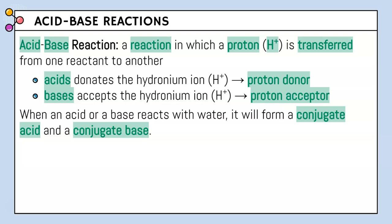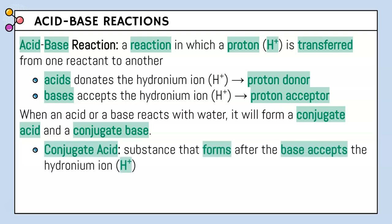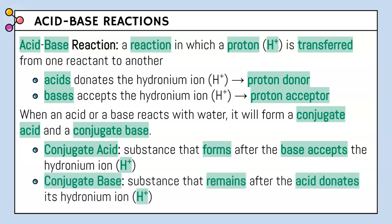When an acid or a base reacts with water, it will form a conjugate acid and a conjugate base. A conjugate acid is a substance that forms from the base after the base accepts the hydronium ion, and a conjugate base is a substance that remains after the acid donates its hydronium ion.